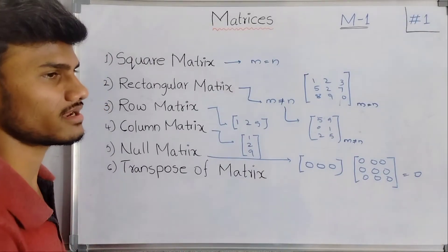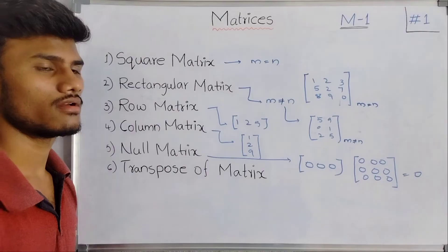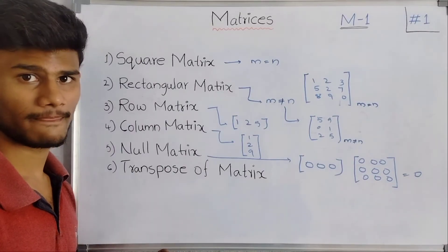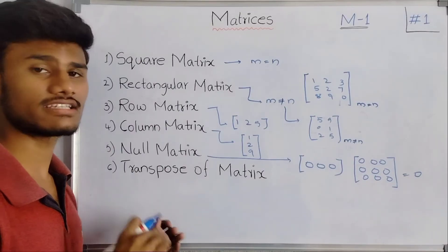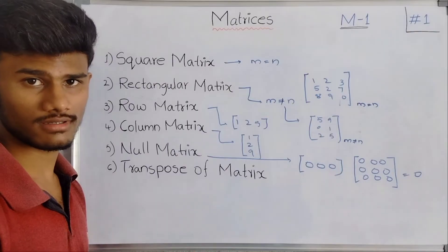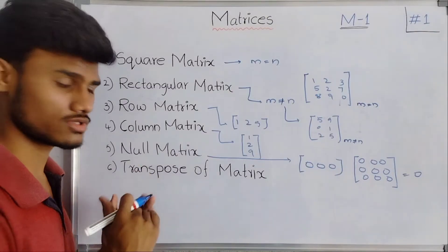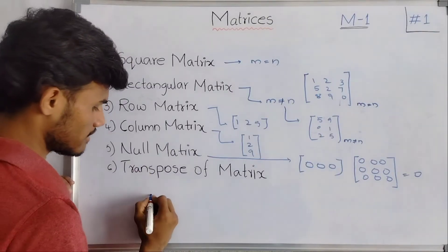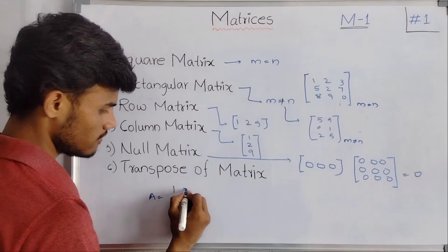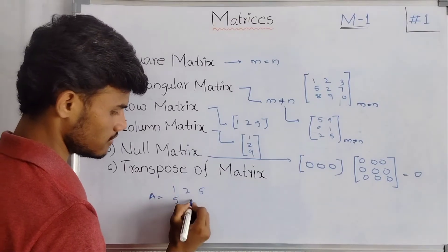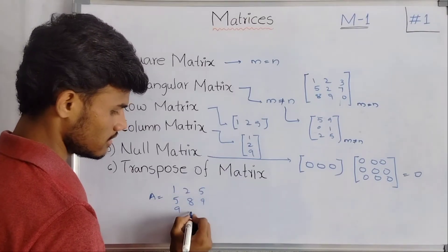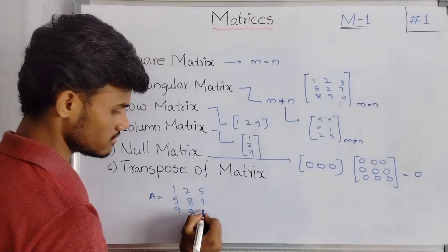Next, transpose of a matrix. What is a transpose of a matrix? The transpose of a matrix means the interchange of rows to columns and columns to rows. For example, the matrix A with elements 1, 2, 5, 5, 8, 9, 9, 8, 0.